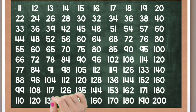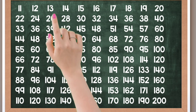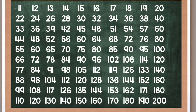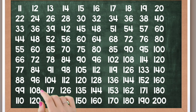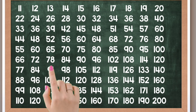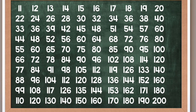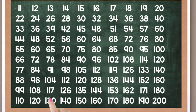12 times 10 is 120. 13 times 1 is 13, 13 times 2 is 26, 13 times 3 is 39, 13 times 4 is 52, 13 times 5 is 65, 13 times 6 is 78, 13 times 7 is 91, 13 times 8 is 104, 13 times 9 is 117, 13 times 10 is 130.